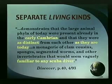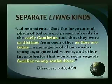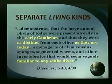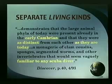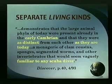Not only do we see this sudden, complex, diverse beginning right from the start, but as you continue upward you see that there are separate and distinct kinds throughout the record, not this progressive continuum. Quoting from Discover Magazine, they describe this lowest part and the continuing fossil record. This demonstrates, we are told, that large animal phyla of today were present already in the early Cambrian and that they were as distinct from each other as today — a menagerie of clam cousins, sponges, segmented worms, other invertebrates, that would seem vaguely familiar to any scuba diver.